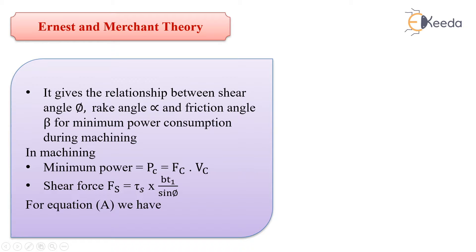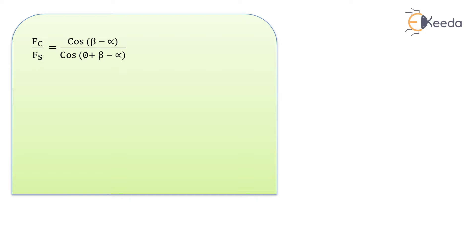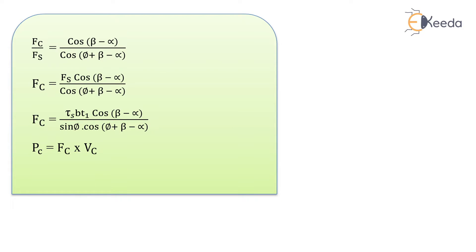We know the shear force as the shear strength of the material into the sheared area. Sheared area is Bt1 divided by sin phi. From equation A, we can write the relation between cutting force Fc and shear force Fs as: Fc divided by Fs equals cos of (beta minus alpha) divided by cos of (phi plus beta minus alpha).